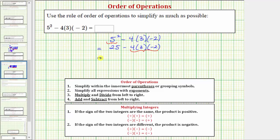So we'll have 25 minus, and then positive 4 times 3 is 12, 12 times negative 2 equals negative 24. So we have 25 minus negative 24.